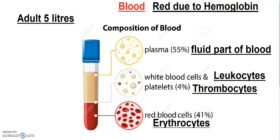Let's talk about more details. In an adult human body, there is approximately 5 liters of blood. Plasma — if you talk about plasma, you can see it in the picture. It is a faint yellow color.